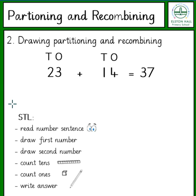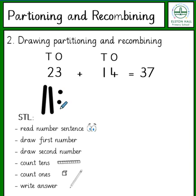We then move on to partitioning and recombining by drawing, so this time we're going to draw the numbers. The number 23 has 2 tens, so we draw 2 ten-sticks, and it has 3 ones, so we draw 3 ones. The number 14 has 1 ten-stick and 4 ones, so we draw 1 ten-stick and 4 dots.